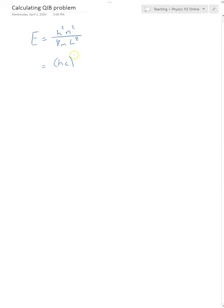If you remember in class, what I told you is that actually it's better if you multiply both sides by c squared, and so then you get hc squared n squared, and you get 8mc squared l squared.